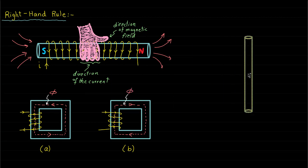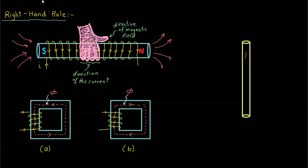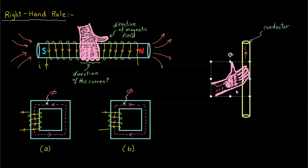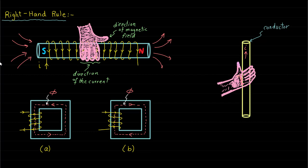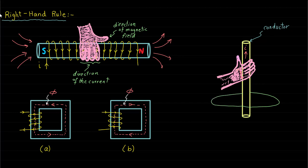The right-hand rule can also be applied to the current-carrying conductor case. To apply the right-hand rule here, grab the conductor with your right hand with the thumb pointing in the direction of the current through the conductor. The other four fingers will point to the direction of the magnetic field.